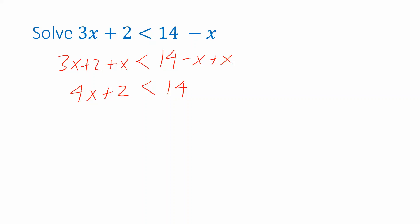And then continue. Let's get rid of the 2 on the left side by subtracting 2 from both sides. So 4x plus 2 minus 2 is less than 14 minus 2. And then plus 2 minus 2 cancel. So I have 4x on the left. 14 minus 2 is 12 on the right.